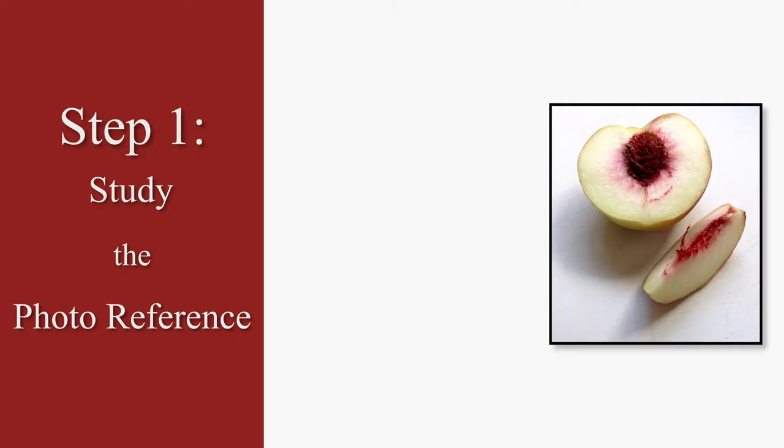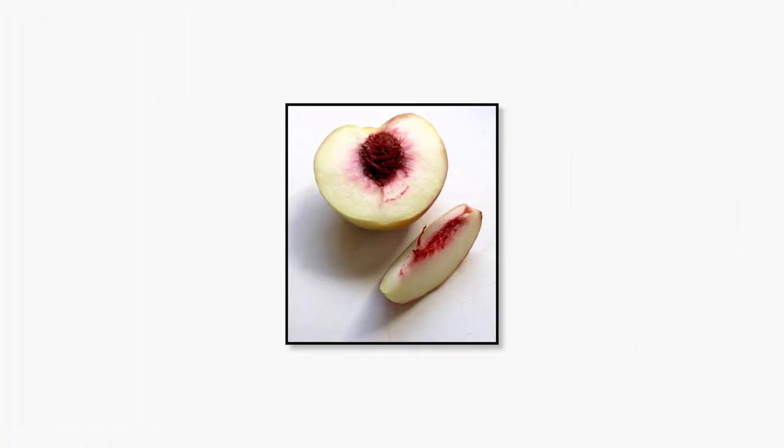When you really look at this photo, you will notice that the peach's core is the darkest value in the photo. So my rule is to start your coloring with the darkest value object first, the peach's core. Then color the medium value object, which in this case is the shadow. Finally, paint the lightest value object, the peach.